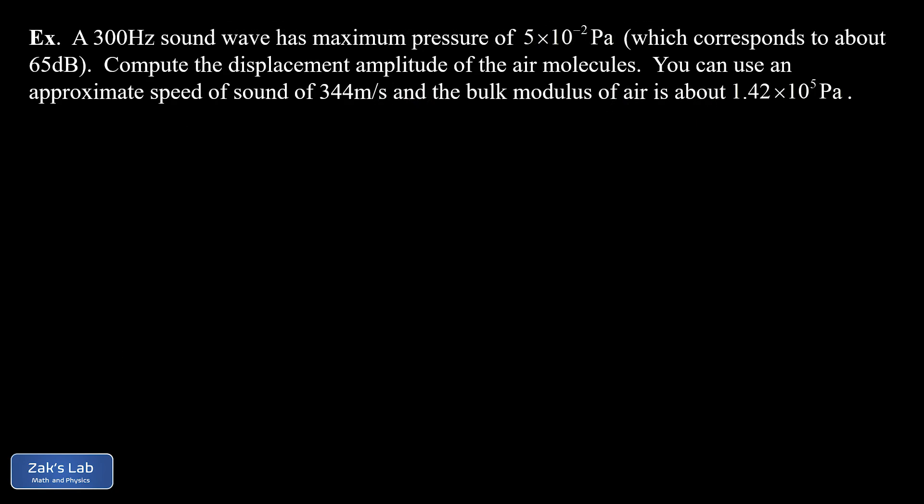In the example, we have a 300 Hz sound wave — a single pure tone. We're told the maximum pressure due to this wave is 5 × 10⁻² pascals, which roughly corresponds to about 65 decibels. We want to find the displacement amplitude of the air molecules — how much are they actually wiggling? We're given a speed of sound of 344 m/s and a bulk modulus of air of about 1.42 × 10⁵ Pa.